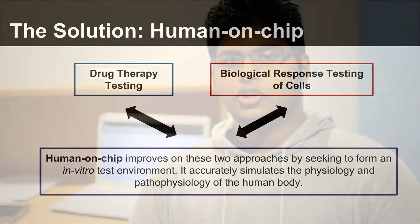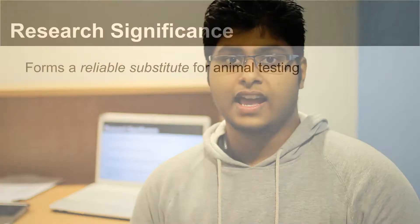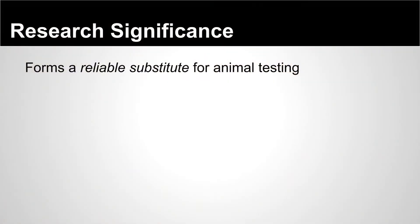Why use a Human on Chip system? First of all, it is a better alternative to animal testing because of its increased reliability and simulation of a natural biological cell response.